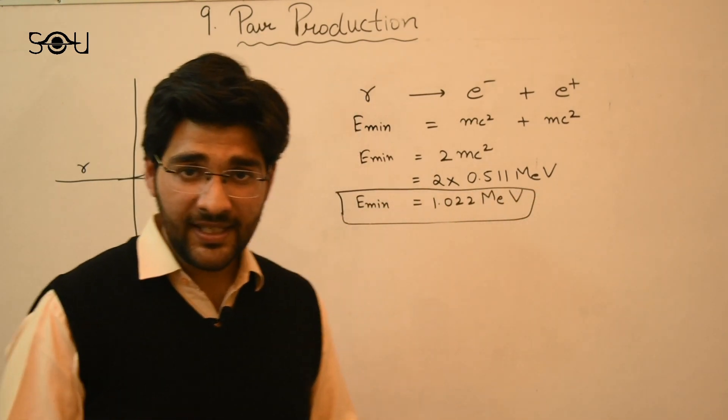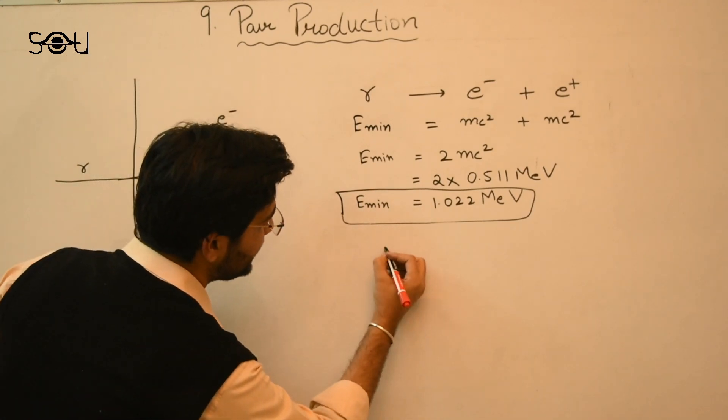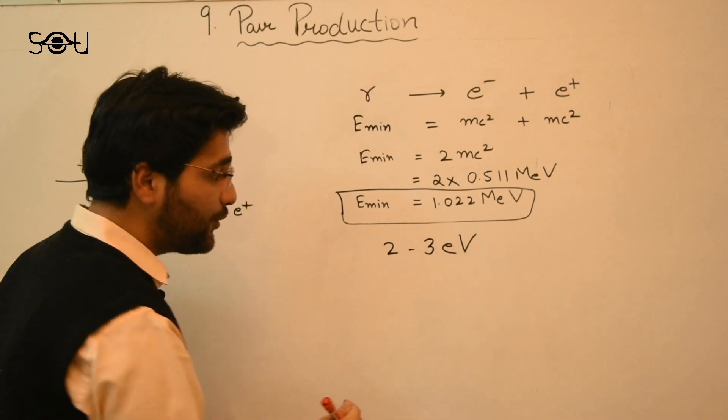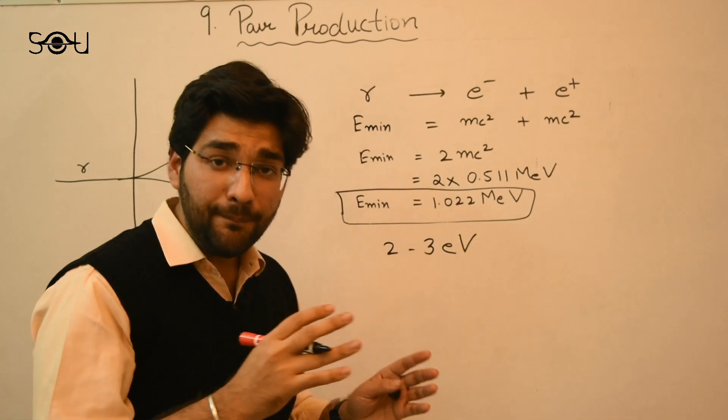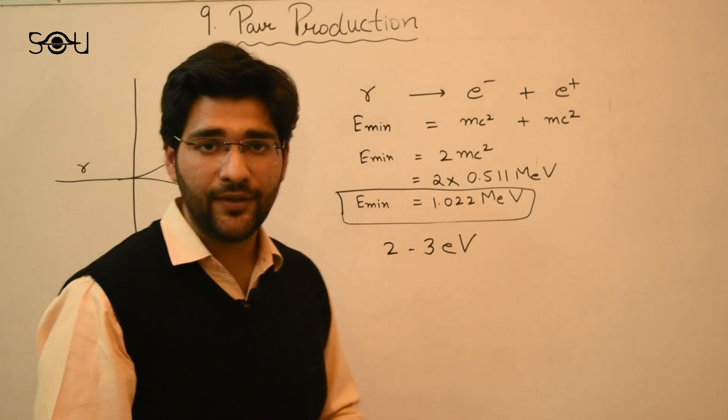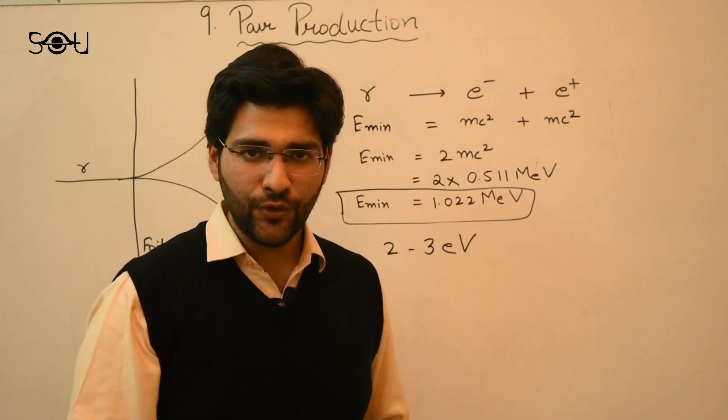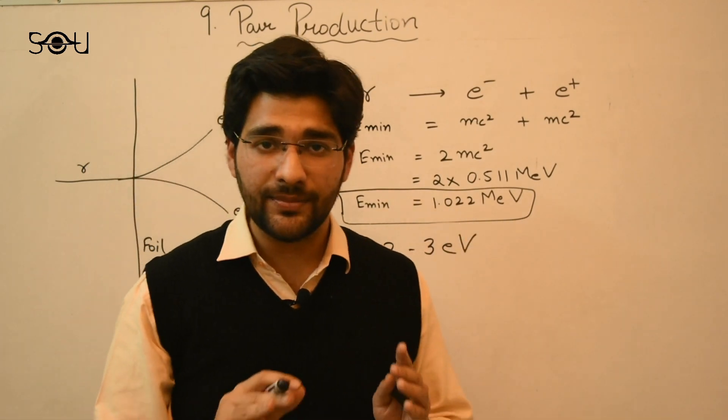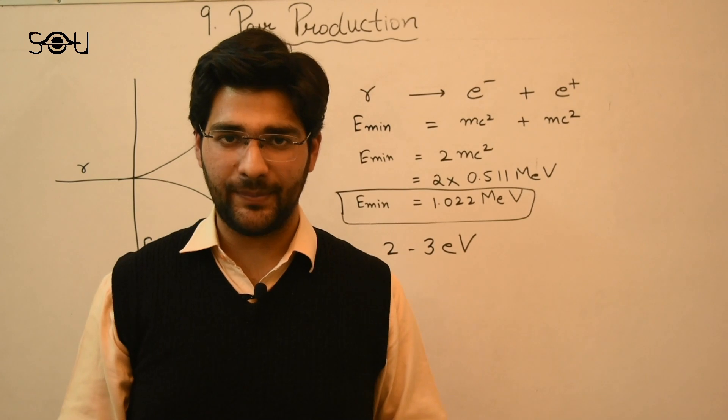Now the visible light has energy range between 2 to 3 electron volts. Now you can see clearly that this is about a million times less than the minimum energy required for pair production. Any photon that has lesser energy than this number cannot produce the electron and positron pairs.